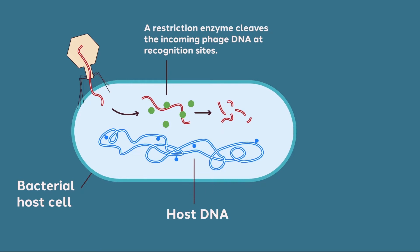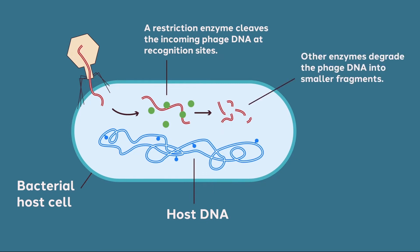In order to defend themselves from the bacteriophage, bacteria have evolved sequence-specific DNA endonucleases. The restriction enzyme cuts the bacteriophage DNA into small fragments, preventing the bacteriophage from replicating.